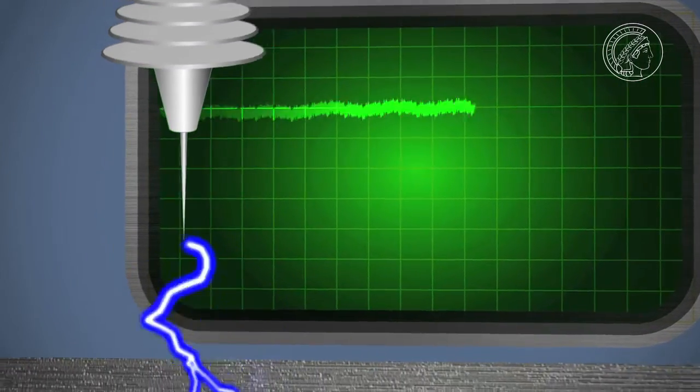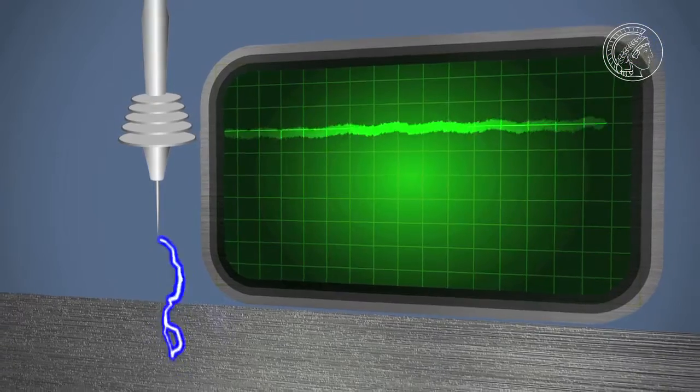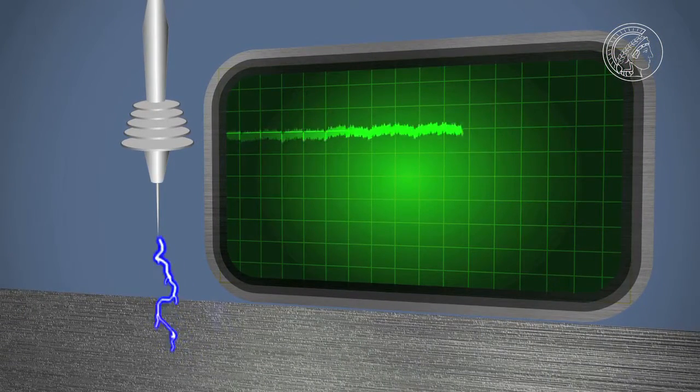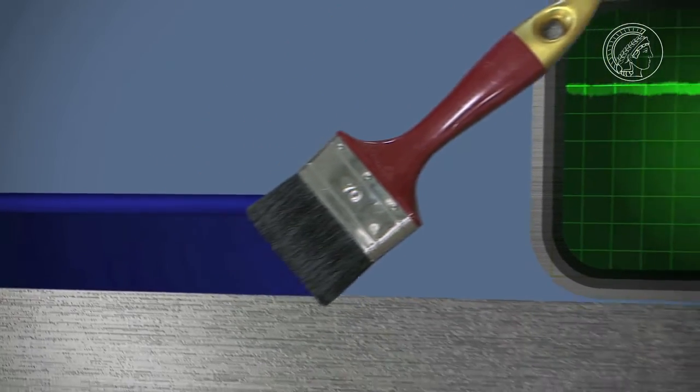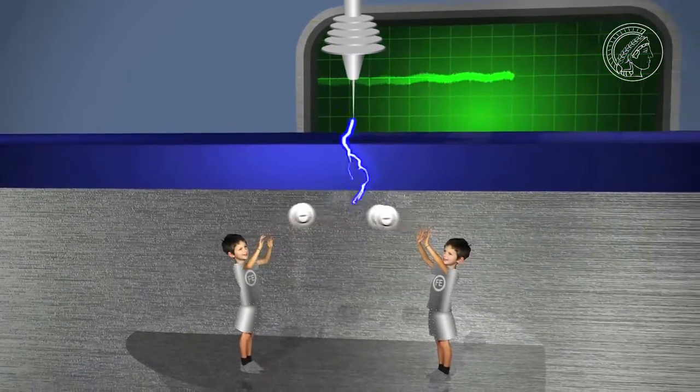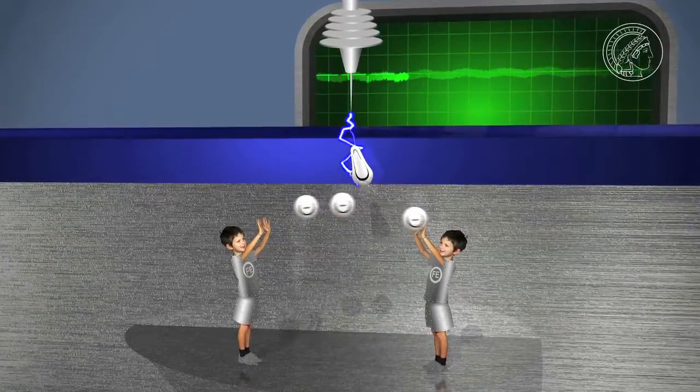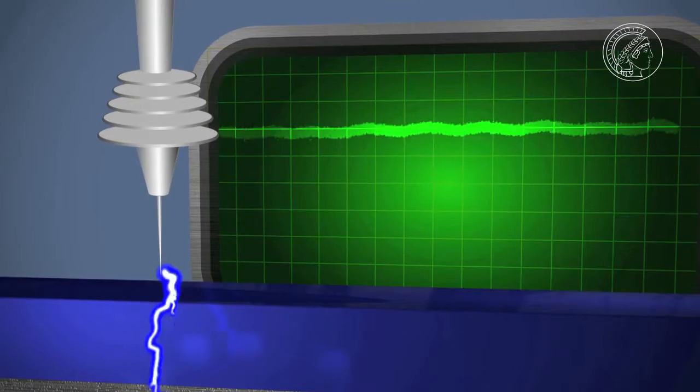The Kelvin probe measures the electrical tension to find out how much effort is necessary to release electrons from a surface. The remarkable thing is that the process functions even through a layer of varnish. If the varnish and metal surface are firmly bonded together, that is not so easy. The probe measures high tension.